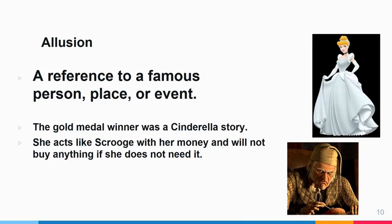Allusion is when an author alludes to or refers to a famous person, place, or event. For example, the gold medal winner was a Cinderella story — the author is referring to Cinderella, meaning someone from low status who achieves great things unexpectedly. Another example: she acts like Scrooge with her money and will not buy anything she doesn't need — this refers to Ebenezer Scrooge.